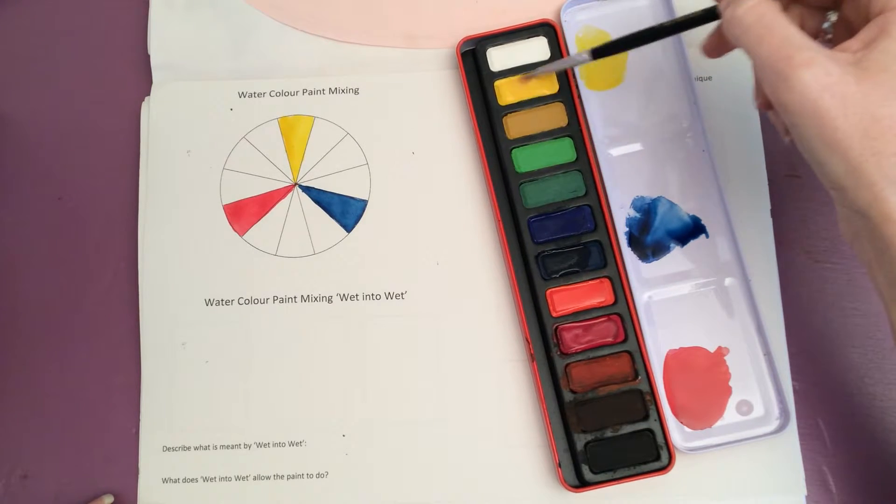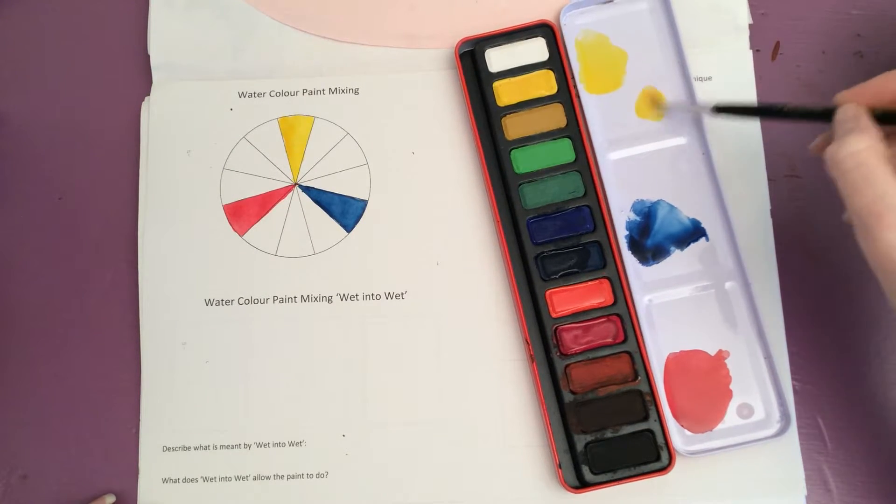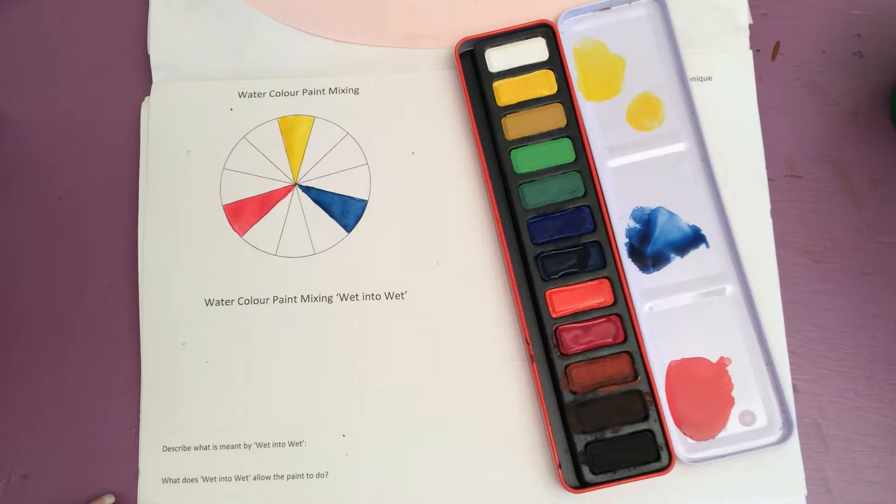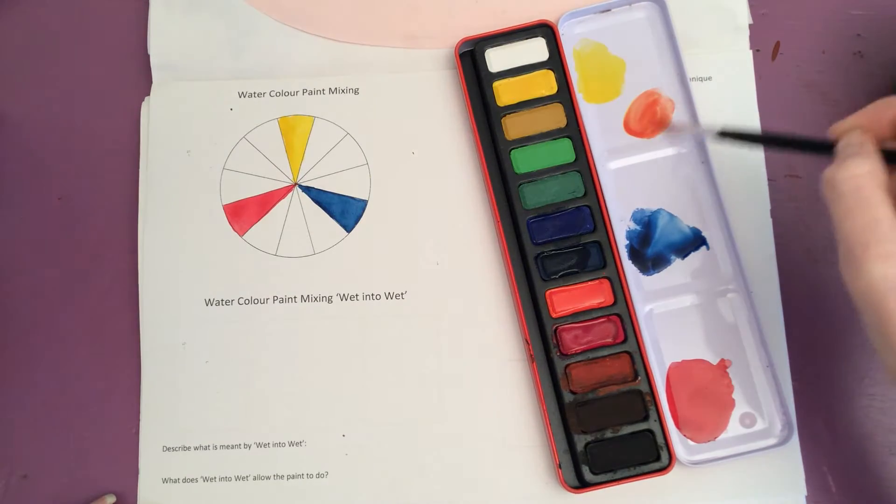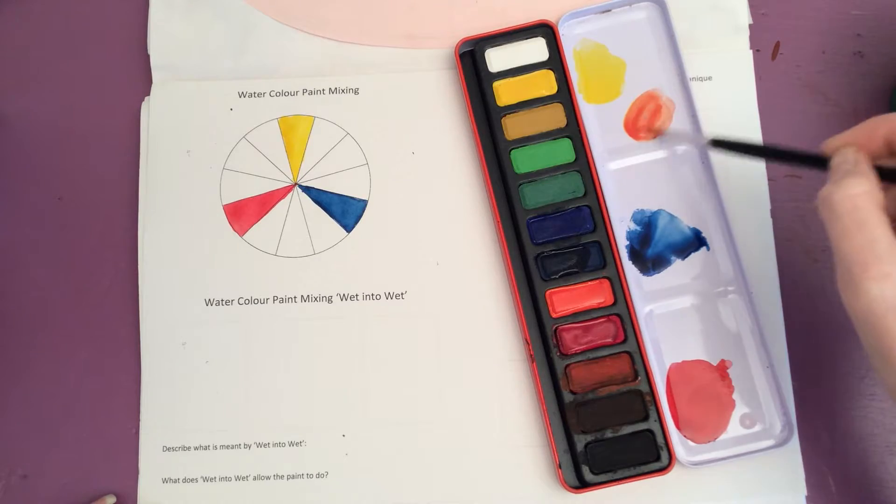So I'm going to take some more yellow out of my palette, put it into the lid, and take a little bit of the red from here and mix that in there. So I've got my orange.